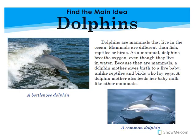Let's look at another example. This story is called Dolphins. It says dolphins are mammals that live in the ocean. Mammals are different than fish, reptiles, or birds. As a mammal, dolphins breathe oxygen, even though they live in water, because they are mammals. A dolphin mother gives birth to a live baby. Unlike reptiles and birds who lay eggs, a dolphin mother also feeds her baby milk, like other mammals.